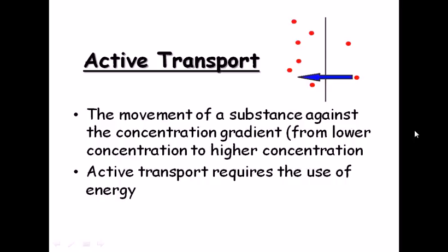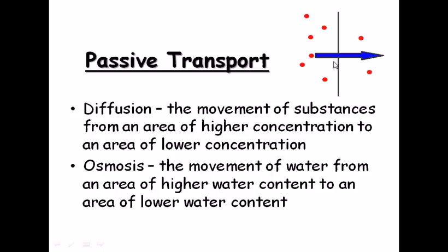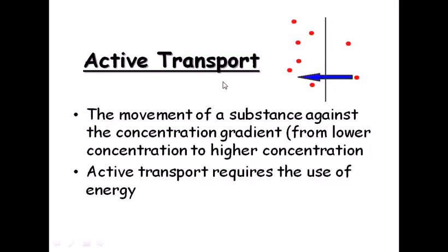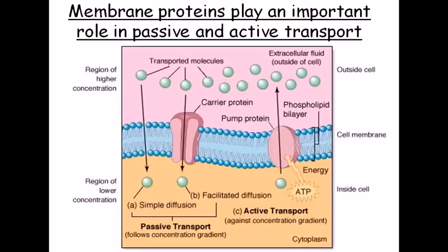Diffusion and osmosis are examples of passive transport — movement from higher concentration to lower concentration requires no energy. Active transport, on the other hand, moves substances from lower concentration toward higher concentration and requires energy to do so. Membrane proteins play an important role in both passive and active transport. Some molecules cannot freely diffuse through the membrane but are present in higher amounts in the extracellular space, so they can enter the cell via protein channels or carrier proteins.